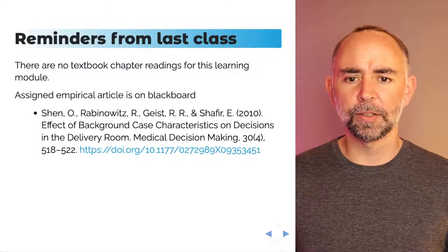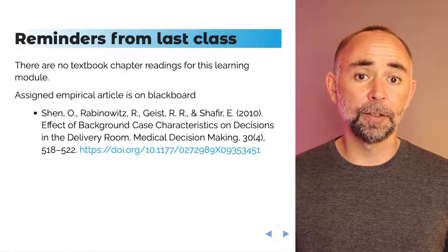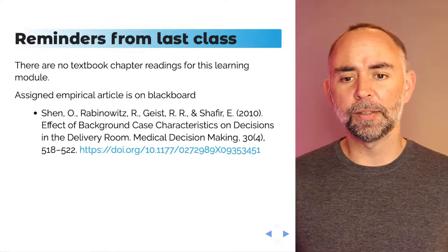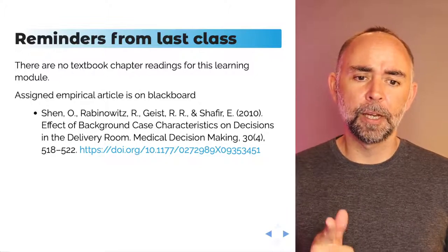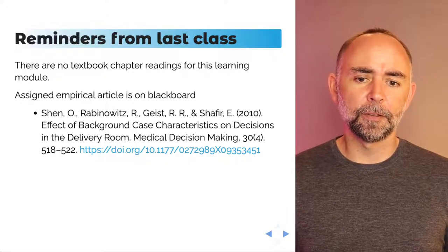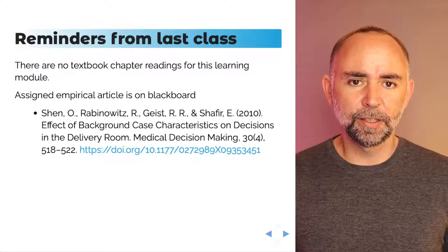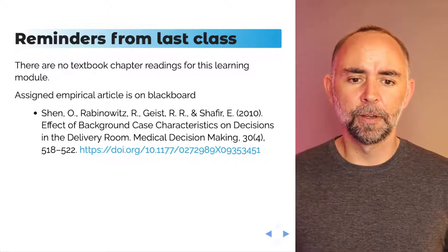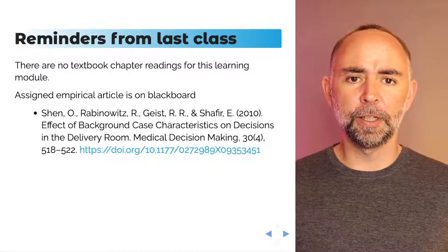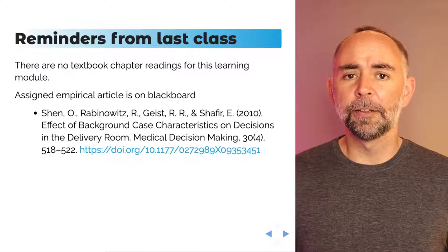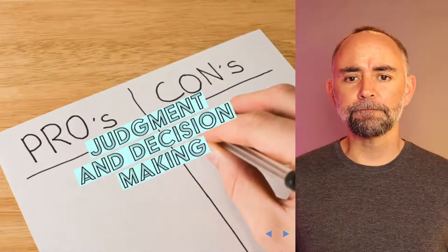Here's what's in store. First of all, there's no textbook readings — we've run out of the textbook for this course. I do have one assigned empirical article you can get on Blackboard: 'The Effect of Background Case Characteristics on Decisions in the Delivery Room' from the Journal of Medical Decision-Making. Make sure you read that article. It's pretty short, there are quiz questions on it, and it will appear on the final exam.